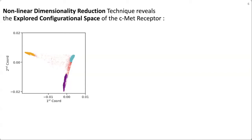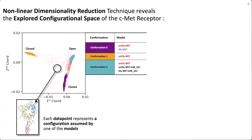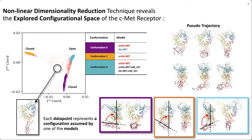The advantage of this approach is that for each point in the new representation, we can map back to the original configuration, identifying for each conformation which models explore it. We can also identify representative configurations for each conformation — gathering them between closed and open conformations — and understand the global motions that lead the receptor to pass from one conformation to another by building pseudo-trajectories along the coordinates spanning this two-dimensional representation.